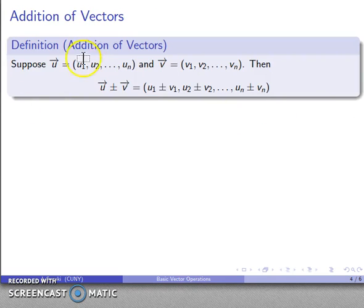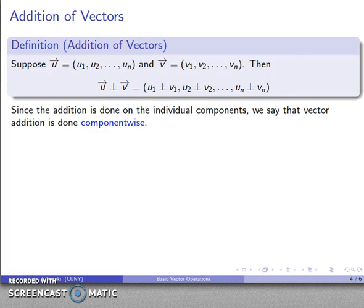So something else we can define, again, I have my two vectors u and v, and then I can define the sum u plus v as the sum of the individual components of the two vectors.